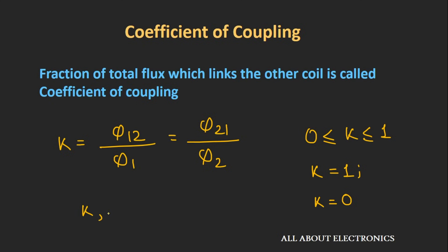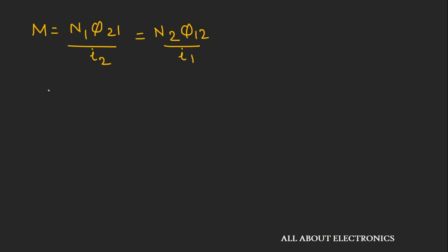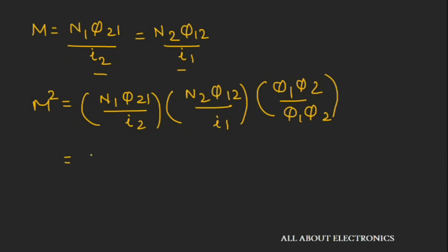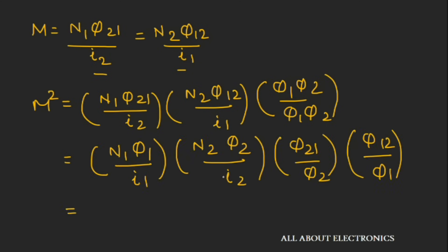Now let's find the relation between the coefficient of coupling and the mutual inductance. Multiplying the two expressions for M, we get: M² = (N1 × φ21 / i2) × (N2 × φ12 / i1). Multiplying and dividing by φ1 and φ2, and rearranging: M² = (N1 × φ1 / i1) × (N2 × φ2 / i2) × (φ21/φ2) × (φ12/φ1).